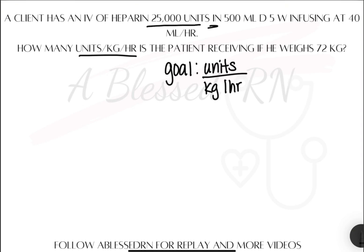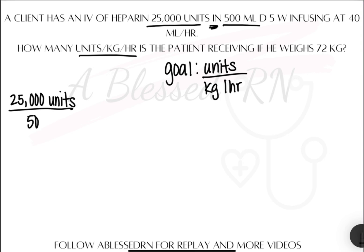So what are our puzzle pieces? Anything that goes together. You see 25,000 units in 500 milliliters — that signifies they are together. So we'll put 25,000 units on the top and 500 milliliters on the bottom. And it's going at a rate of 40 milliliters per hour, so we keep that together: 40 milliliters on the top, hour on the bottom. And his weight is 72 kilograms, which is by itself.